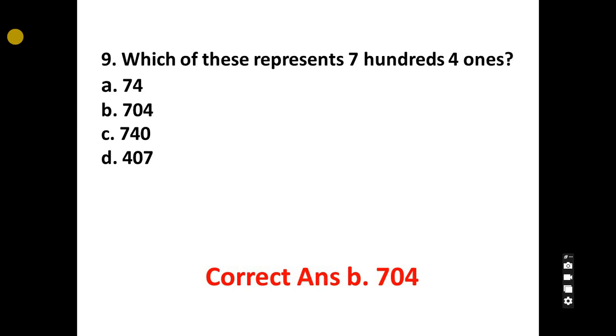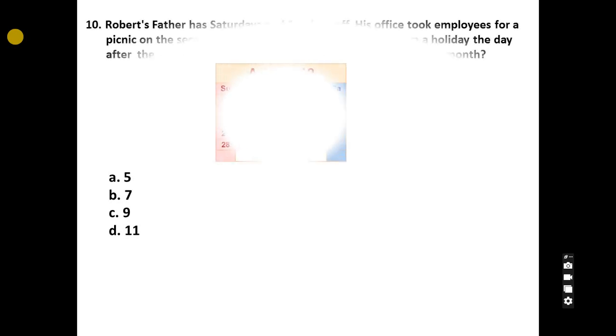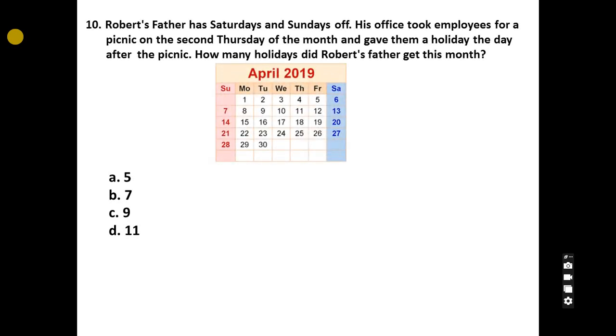10. Robert's father had Saturday and Sunday off. His office took employees for a picnic on the second Thursday of the month and gave them a holiday on the day after the picnic. How many holidays did Robert's father have this month? A, 5, B, 7, C, 9, D, 11.